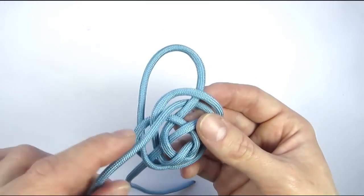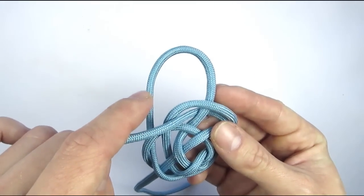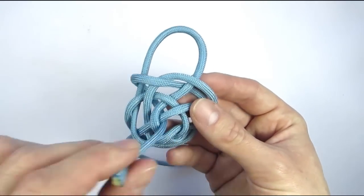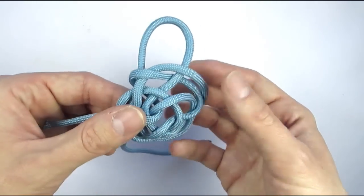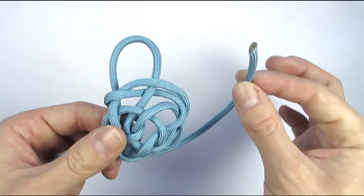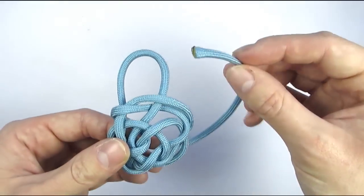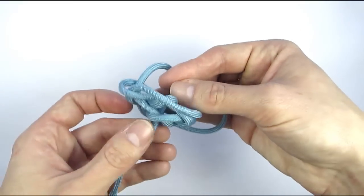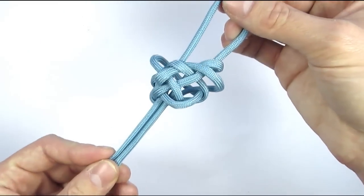With our bottom cord, we're going to go past this right cord here and through the middle. With this, we have tied our double lanyard knot.